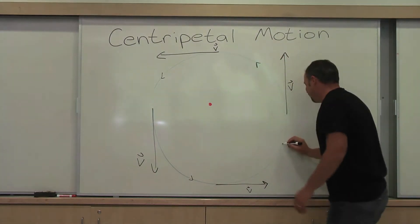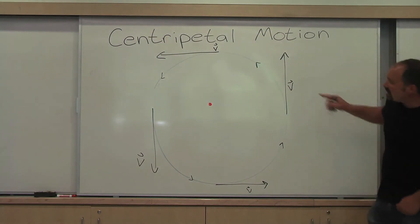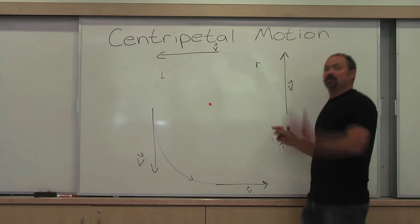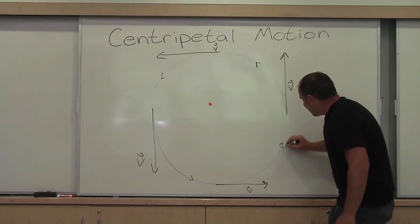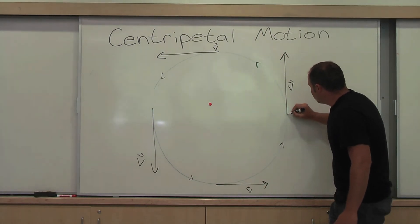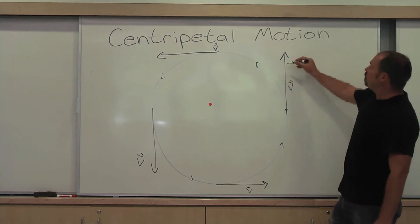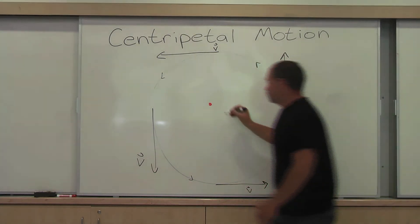And the reason this was the correct place to release it, if I wanted to go straight up, is because at this point on its motion, the instantaneous velocity is going here. And the only reason it stays in a circle is because I have it tied to a string.